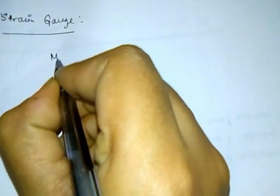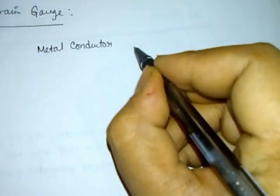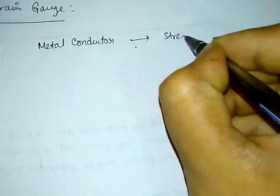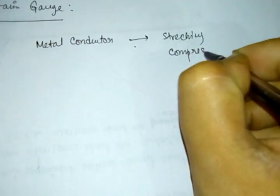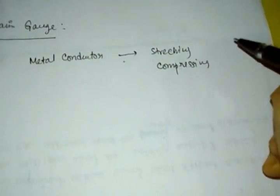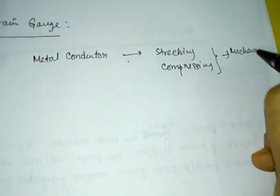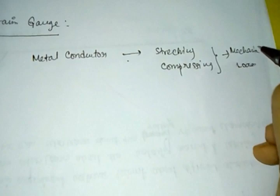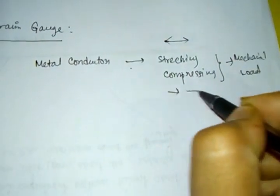The first thing that you need to know about strain gauge is that it is a metal conductor. The second thing is it can be stretched or compressed — it is basically subject to stretching or compressing. You have to provide two types of operation and that will be a mechanical load operation, because you can give a stretching effect or a compressing effect.